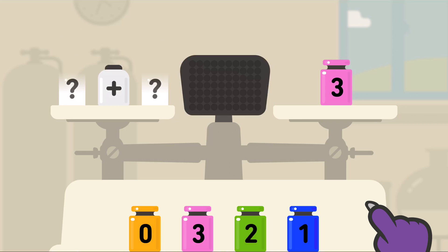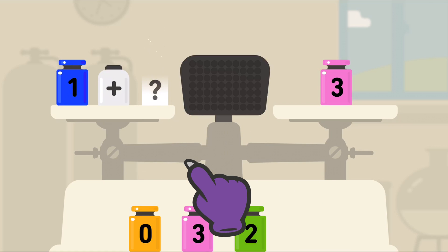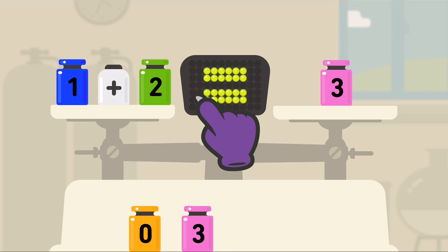So we're looking to make both sides equal three. So let's get two things that equal three. One plus two equals three. Perfect!